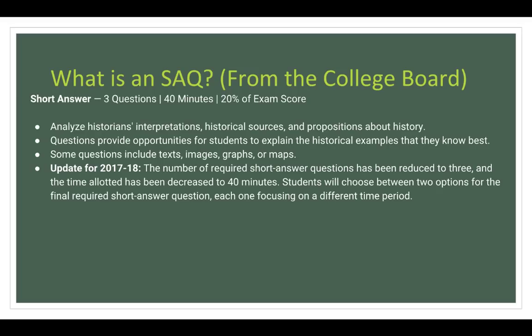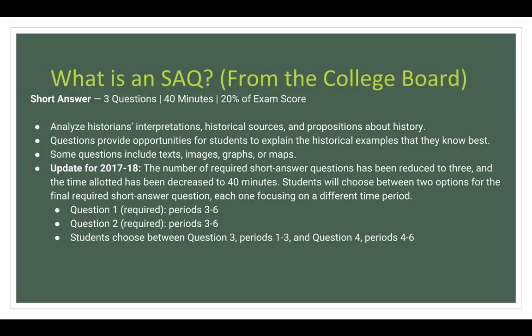Here's an update for 2017, 2018, and beyond. The number of required SAQs is reduced to three, and the time has been decreased to 40 minutes. Students will choose between two options for the final SAQ, each focusing on a different time period. Question one is required and focuses on time periods three through six. Question two, same thing — required, periods three through six. For question three, you can choose between one of two questions: one focusing on periods one through three, or question four focusing on periods four through six. Pick one — so you can do one, two, and three, or one, two, and four, but not three and four together.